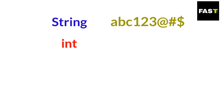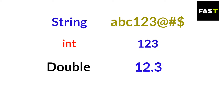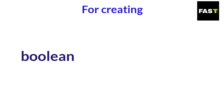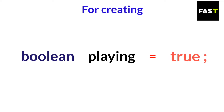As you know, string contains text, int contains integer numbers, double contains real numbers. But boolean contains only true or false. For creating a boolean, first we type boolean, then give a name to it, and then enter its value — true or false.